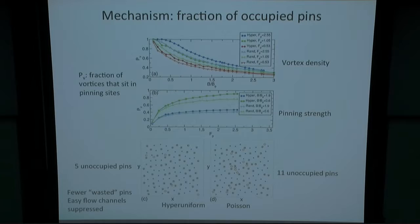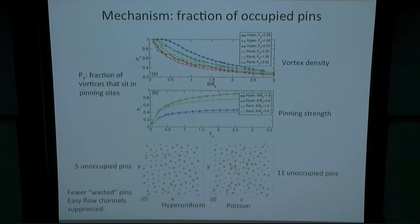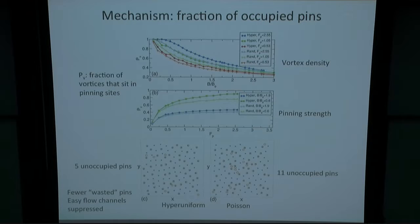Looking at why the hyperuniform pinning was more effective, we can measure the fraction of occupied pins. One of the problems with random arrangements of pins is that two pins placed too close together means the vortex sitting in one pinning site can screen the neighboring pinning site, and then another vortex is never able to occupy it. We find that the fraction of vortices sitting in pinning sites is consistently higher for the hyperuniform pinning than for the random pinning. In real space we see essentially fewer wasted pins. In addition, the easy flow channels are suppressed by this hyperuniform arrangement, because it's less likely that you'll have open space where there are few pinning sites, which is an easy nucleation point for vortex channeling.